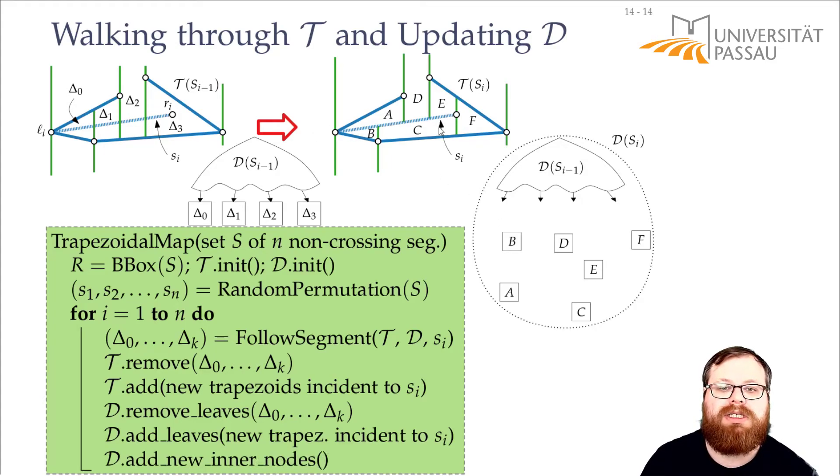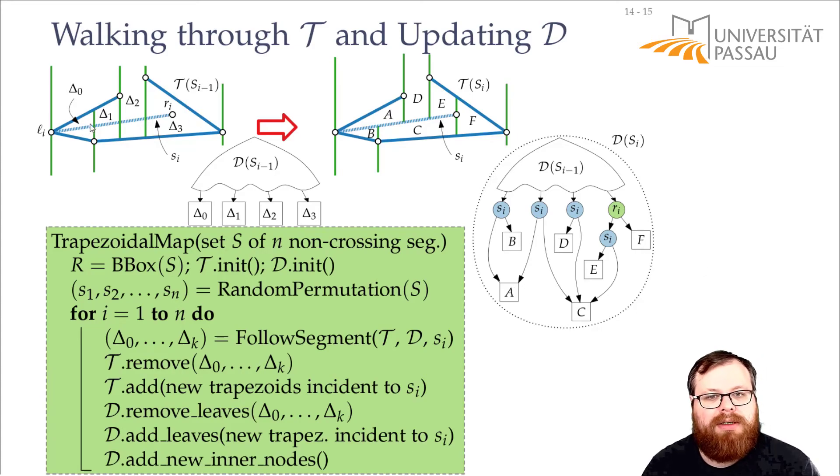This means here we have many Sis, and we have these new boundary vertical rays. So if we look at this here, if we would have ended up in this trapezoid in the beginning, now we still have to split by our new segment Si if we are above or below.